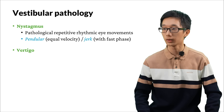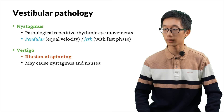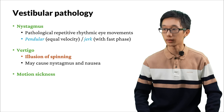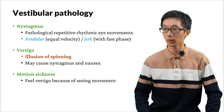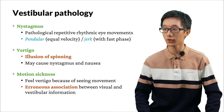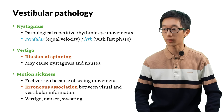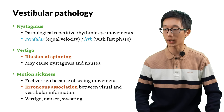Vertigo is the illusion of spinning. It may cause nystagmus and nausea. Motion sickness means that we feel vertigo because of seeing movement but not experiencing it. It is the erroneous association between visual and vestibular information. It may cause vertigo, nausea, and sweating.